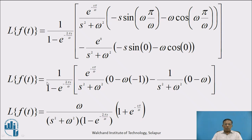Which is equal to 1 upon (1 minus e raised to minus 2πs/ω) into bracket: e raised to minus πs/ω upon (s² + ω²) into bracket: since sin(π) = 0, the term minus s·0 = 0; and cos(π) = −1, so minus ω·(−1) = +ω; minus 1 upon (s² + ω²) into bracket: sin(0) = 0 so minus s·0 = 0; and cos(0) = 1 so minus ω·1 = −ω. Therefore the expression simplifies with ω common in the numerator.